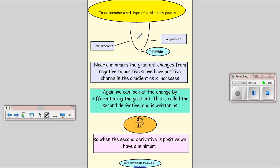So with a minimum, we see we start with a negative gradient, which then becomes positive. So this time when we look at our second derivative, we see that it will be positive if we have a minimum because our gradient went from a negative thing to a positive thing. So it changed in a positive way.